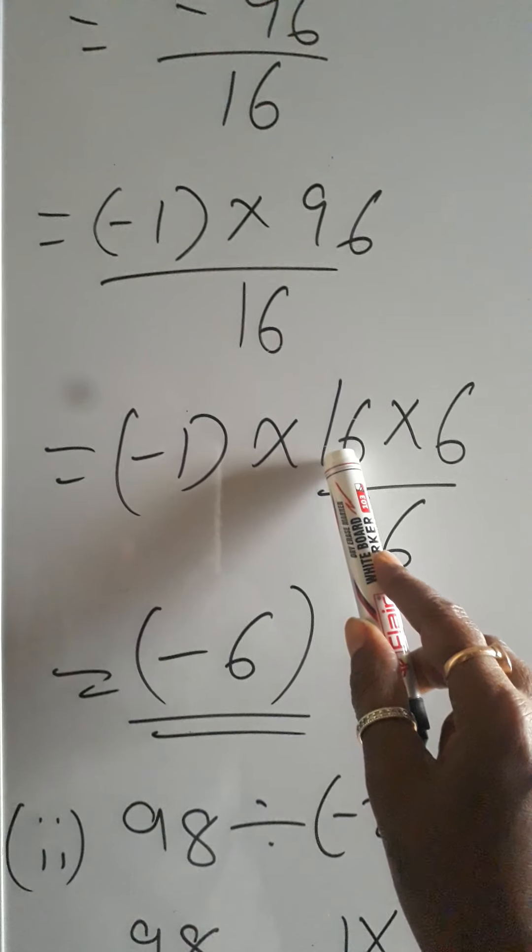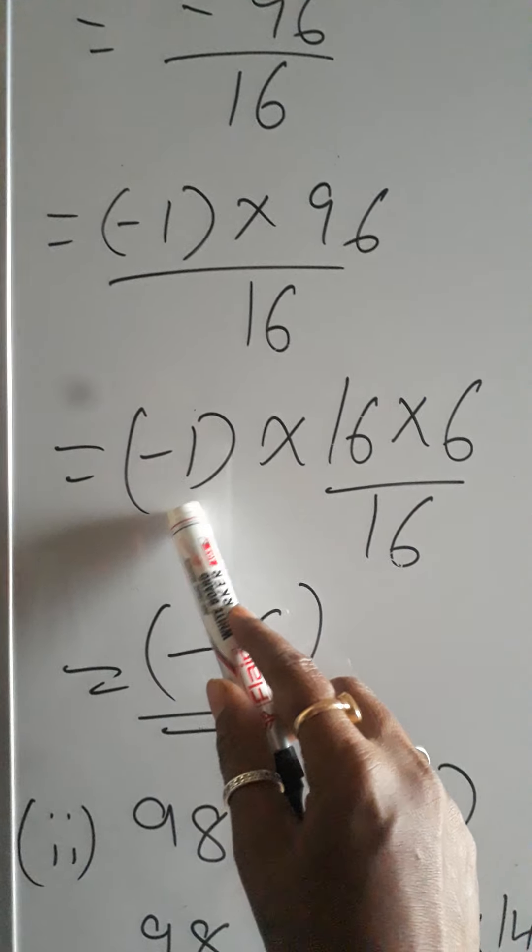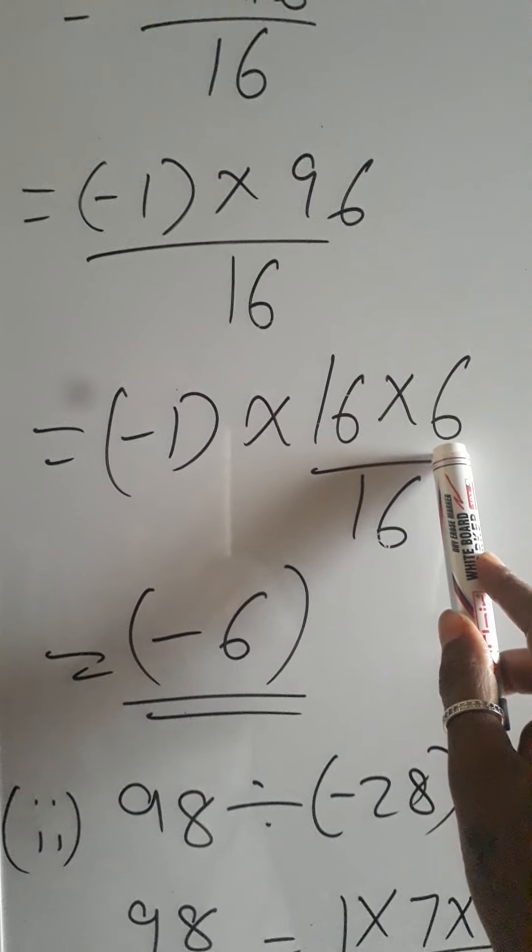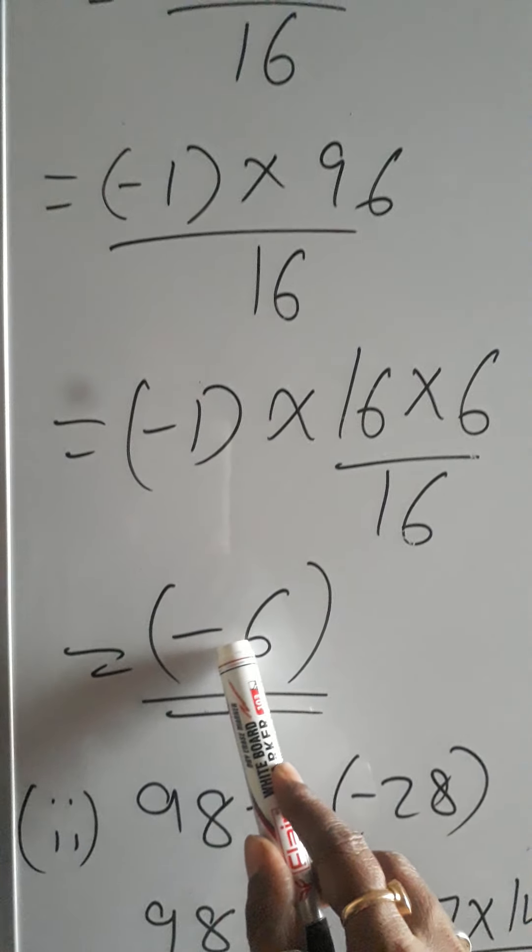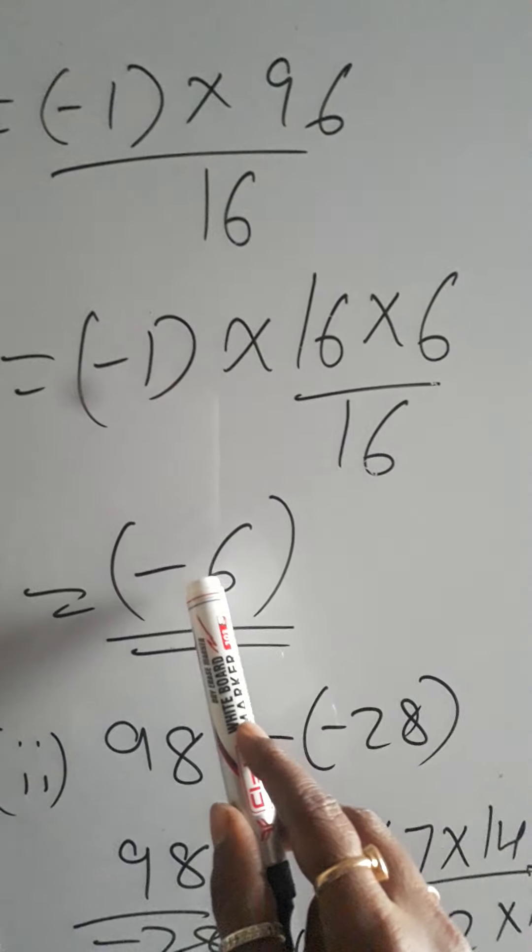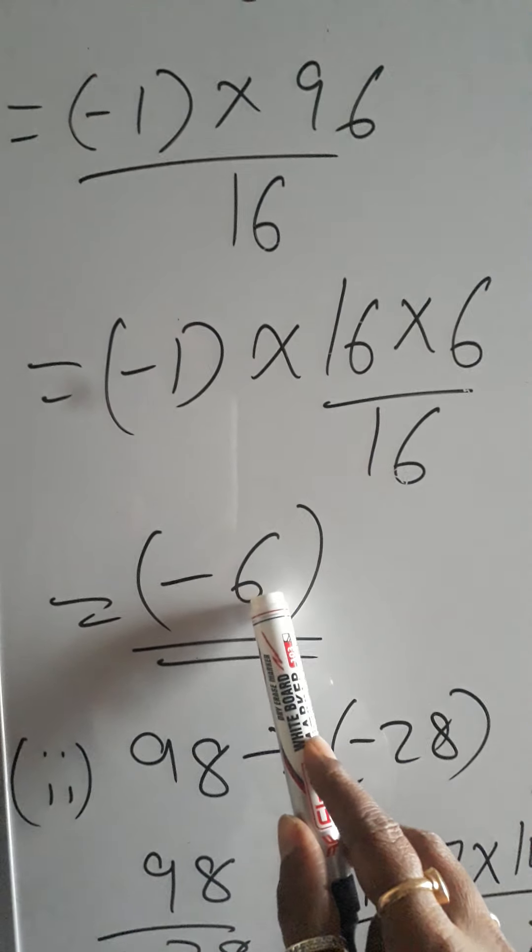And I am left with minus 1 into 6, that means minus 1 into 6 will give me minus 6. So a negative integer divided by a positive integer is giving me an answer as a negative integer.